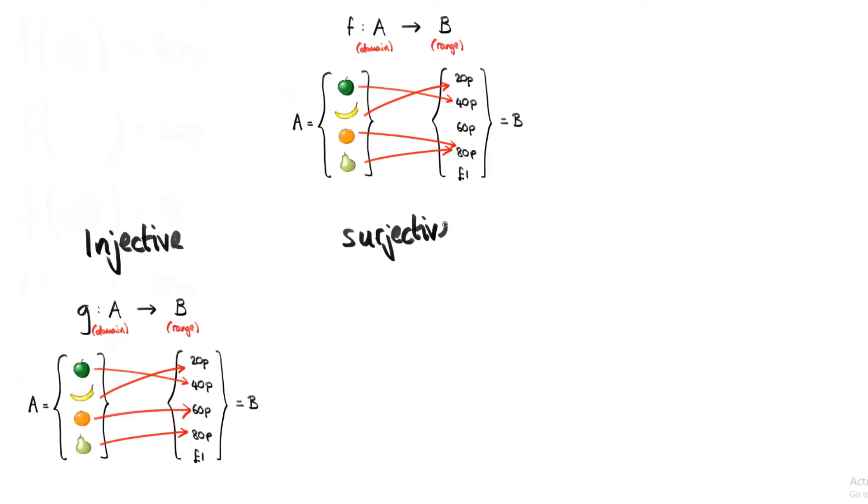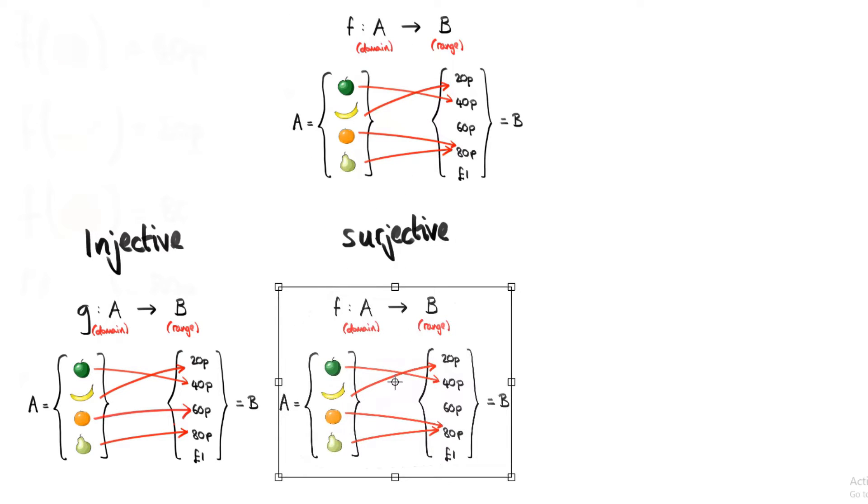A surjective function is one that doesn't have any lonely elements in B, and that means that there are no elements in B without anything pointing towards them. So everything in B has to have something pointing towards it.